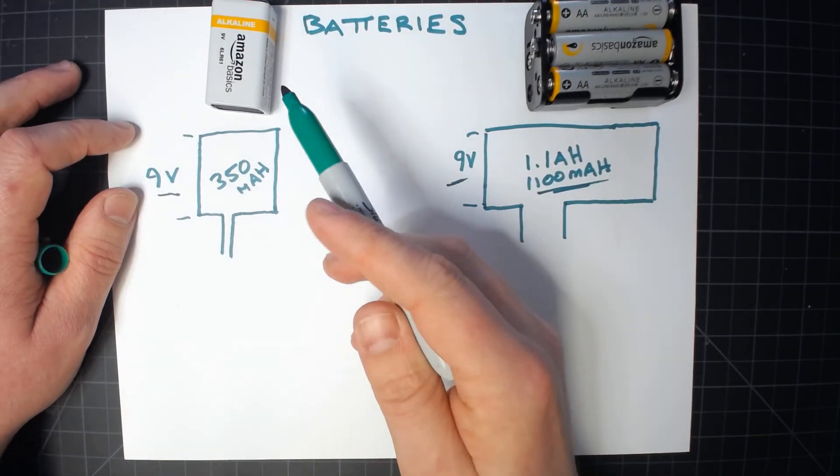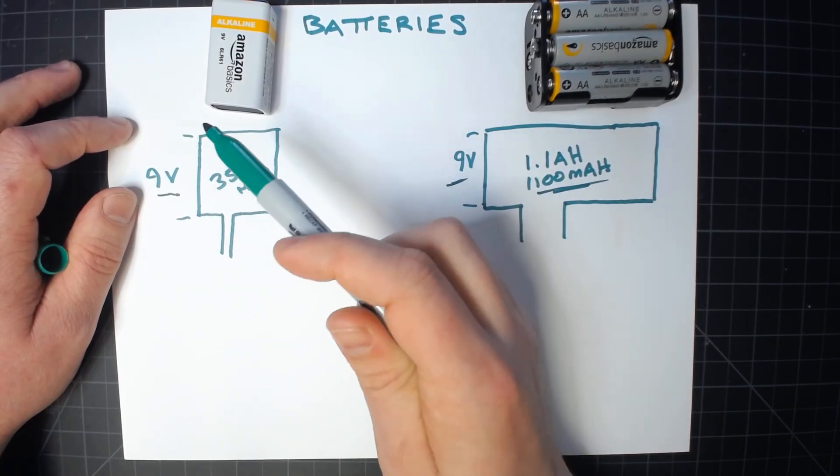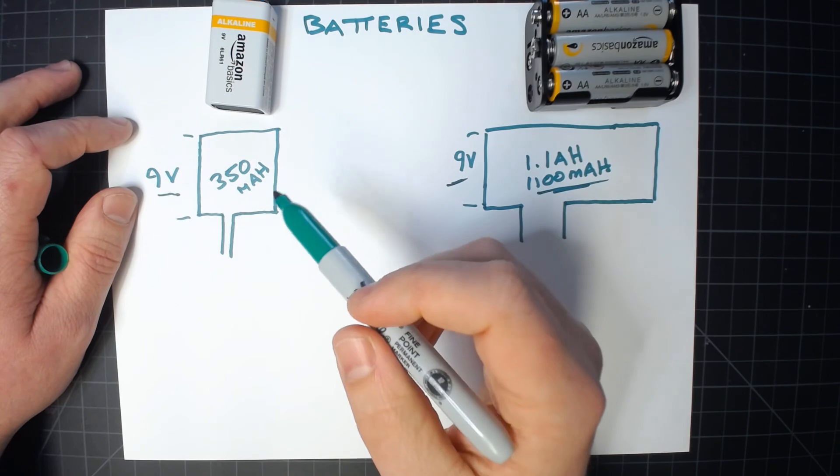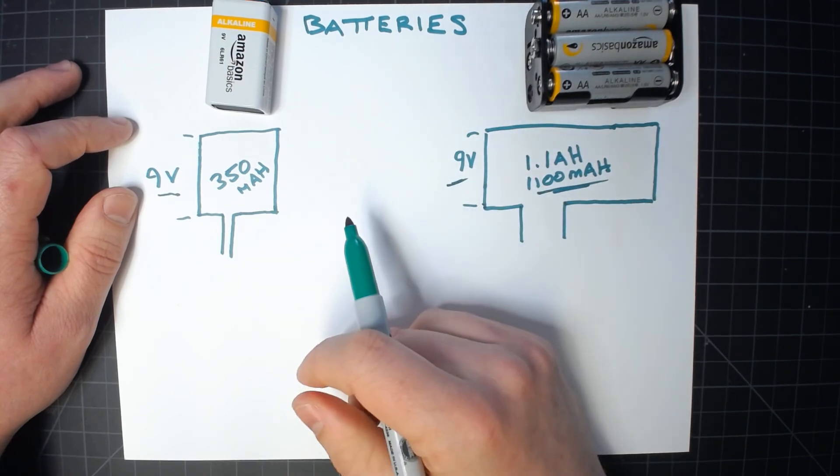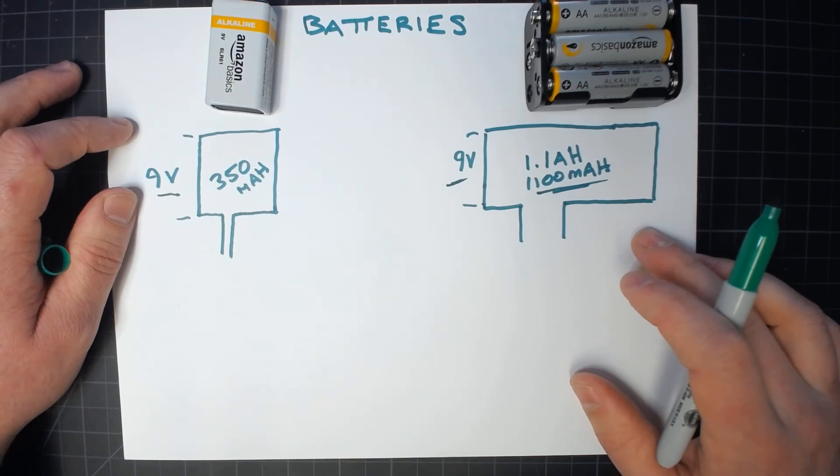So for most applications, especially with the proton packs, a 9 volt is not a good choice unless it's only the lights. If it's just LEDs, like my basic light only kit, this is fine. If you're trying to run sound, you're going to need something much bigger.